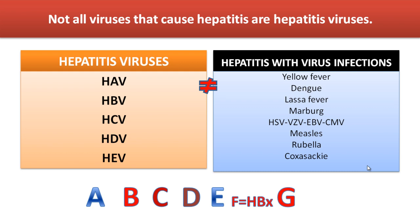Not all the viruses that cause hepatitis are called hepatitis viruses. When we say hepatitis viruses, we mainly mean HAV, HBV, HCV, HDV, and hepatitis E virus. But other virus infections like yellow fever, dengue fever, Lassa fever, Marburg, herpes simplex, varicella zoster, Epstein-Barr virus, cytomegalovirus, measles, rubella, as well as coxsackievirus can also cause hepatitis. We don't include them in the group of hepatitis viruses because these other viruses involve organs other than the liver and have other manifestations. While hepatitis A to E viruses are limited to the liver only — that's why we have clubbed all five of them under one heading: hepatitis viruses.